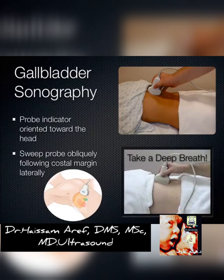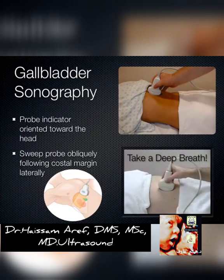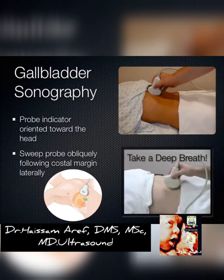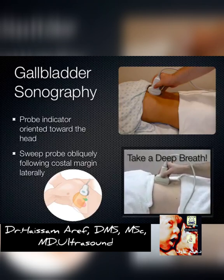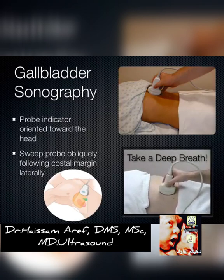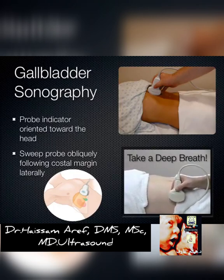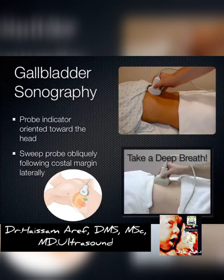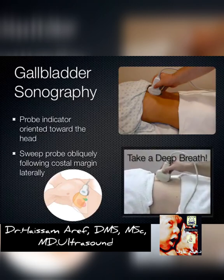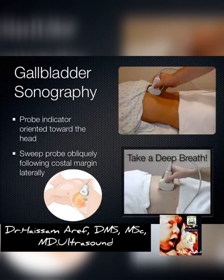Moving on to the gallbladder — this is gallbladder ultrasonography 101. What you do is a subcostal sweep: take the indicator and aim it toward the patient's head, have the patient take a deep breath, and follow along the costal margin. There are so many anechoic structures on the screen that you need a landmark to identify the gallbladder.